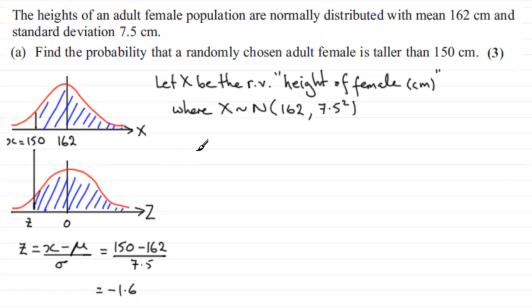So once we've got this, then we're asked to work out the probability that our random variable X, that's the height of the female in centimeters, is greater than 150. And to do this, this is exactly the same as working out the probability that zed is more than minus 1.6. Because this value here is minus 1.6.